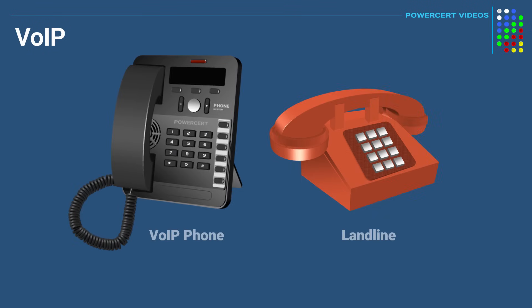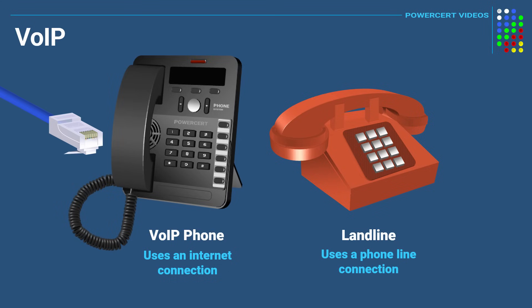A VoIP phone looks similar to a traditional landline, but the main difference is that a VoIP phone uses an internet connection while a landline uses a phone line connection. A VoIP phone has an RJ45 port for an ethernet network cable, while a landline has a standard RJ11 phone port that uses a phone cable.